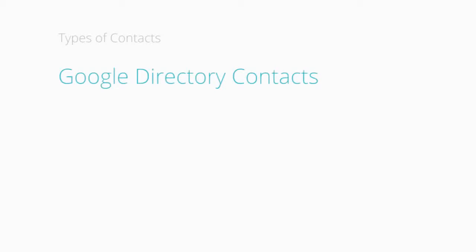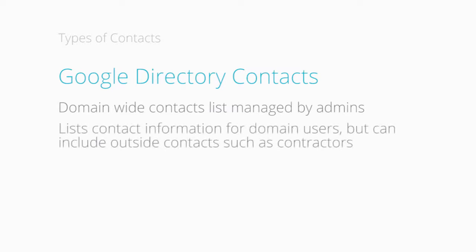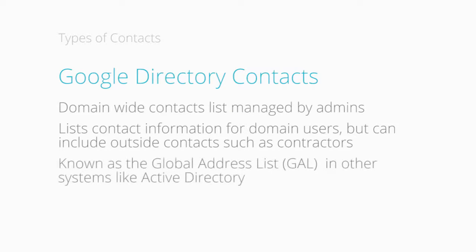First, there's Google Directory Contacts. This is a domain-wide contacts list managed by your administrators. Think of it like a shared address book for your whole company. It lists contact information for your domain users. You can also include external contacts such as contractors and suppliers, and even calendar resources. This type of shared directory is known as the global address list in other systems like Active Directory. This is similar to Google Apps Directory.